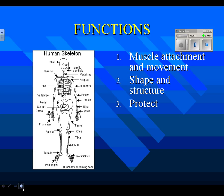Number three is protection — this is the one most people think of right away. The skeleton protects internal organs. You'll notice that the important organs are all very well protected. Your chest, heart, and lungs are protected by a cage of flexible bones. Your brain is protected by a non-flexible cage of bone.